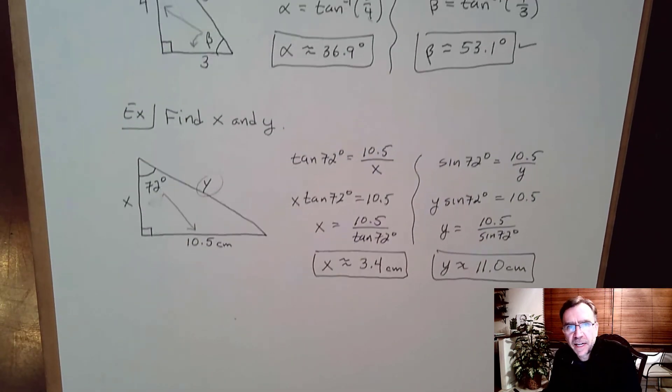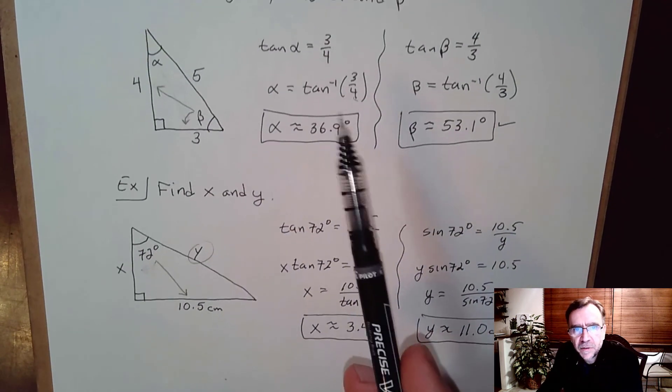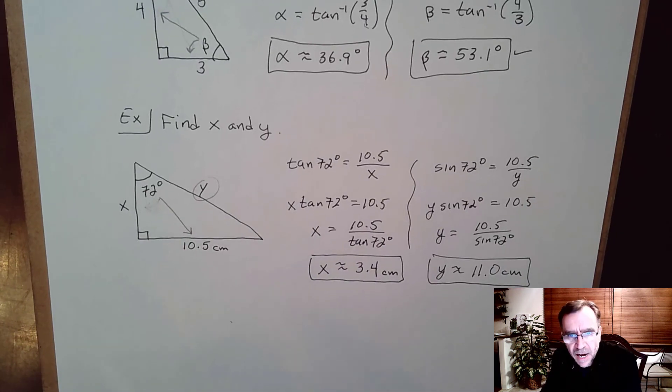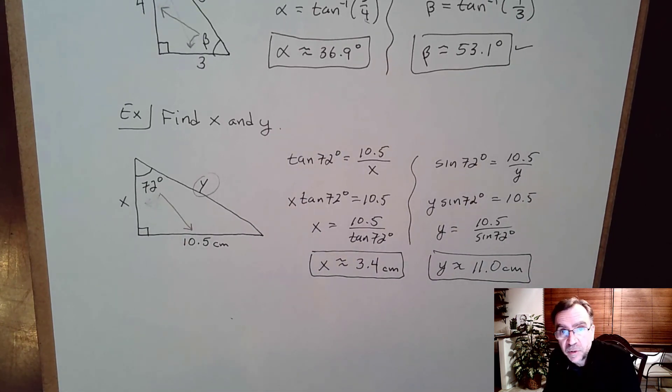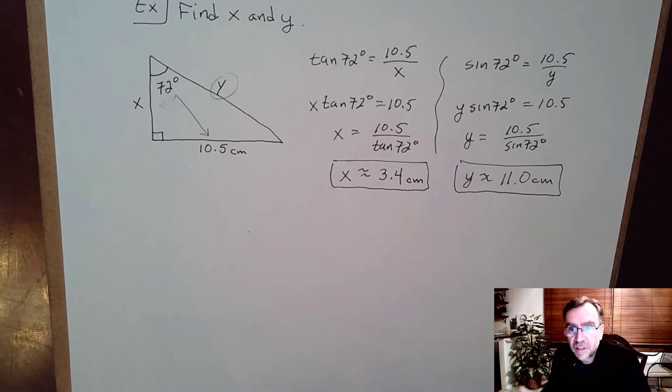So a little bit different than the last one. The last one wanted us to find the angles, so we had to use the inverse functions to do that. Here they wanted us to find the sides. Once we set it up, we just use algebra from there. So that's to get you going on the rest of section 1.4.